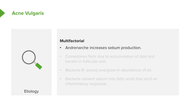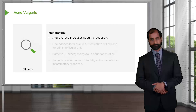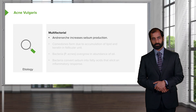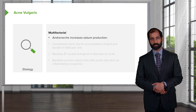Let's take a look at etiology. It's multifactorial. As soon as you hear about acne vulgaris, you're thinking about androgens playing a role. Adrenarche increases sebum production. Think about your patient — a teenager going through puberty — at this point there's going to be increased levels of hormones, especially androgens. During adrenarche, sebum production increases.